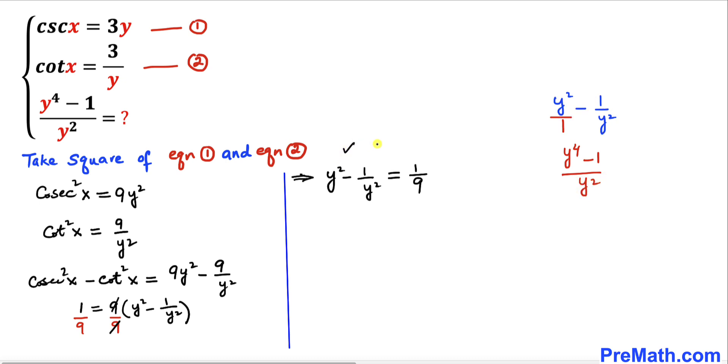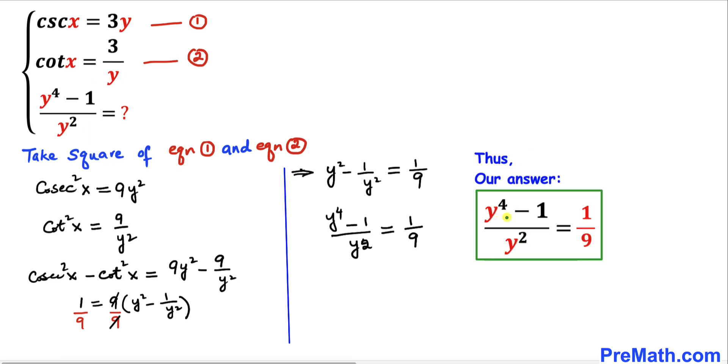Therefore this left hand side could be written as y to the power 4 minus 1 divided by y to the power 2, which equals 1 divided by 9. That's what we were looking for. So the value of y to the power 4 minus 1 divided by y squared turns out to be 1 divided by 9.